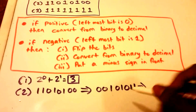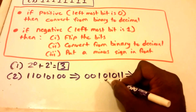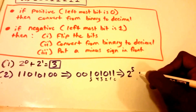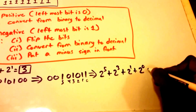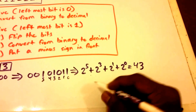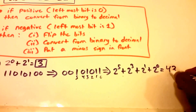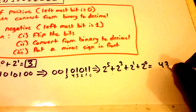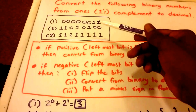Now we convert from binary to decimal. Two to the fifth plus two to the third plus two to the first plus two to the zero equals 43. Then we apply the last step — put a minus sign in front — so the second binary number equals negative 43.